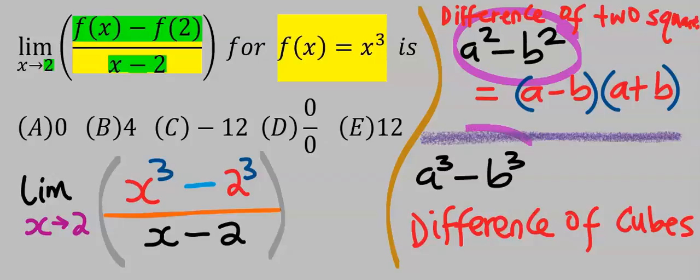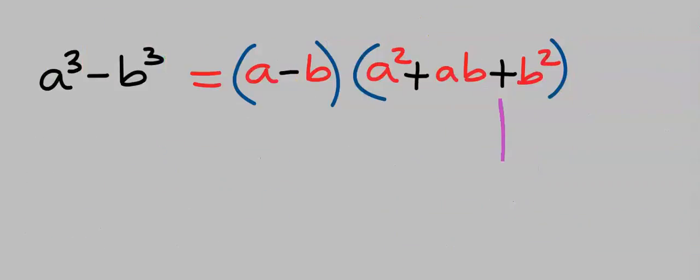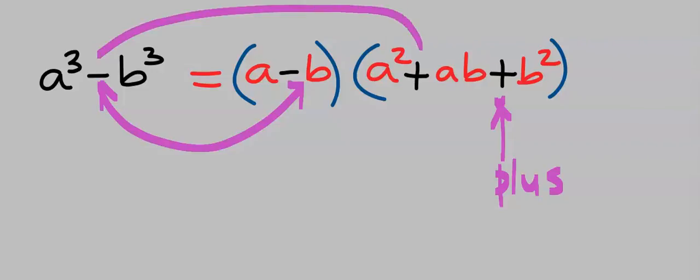We are going to apply difference of cubes to the numerator. In difference of cubes, here must always be a plus. However, if here is minus, here will also be a minus. And if here is minus, the next sign will be the opposite.